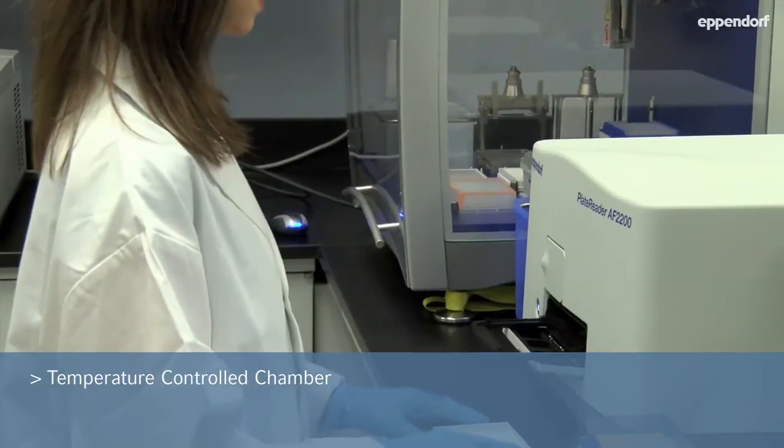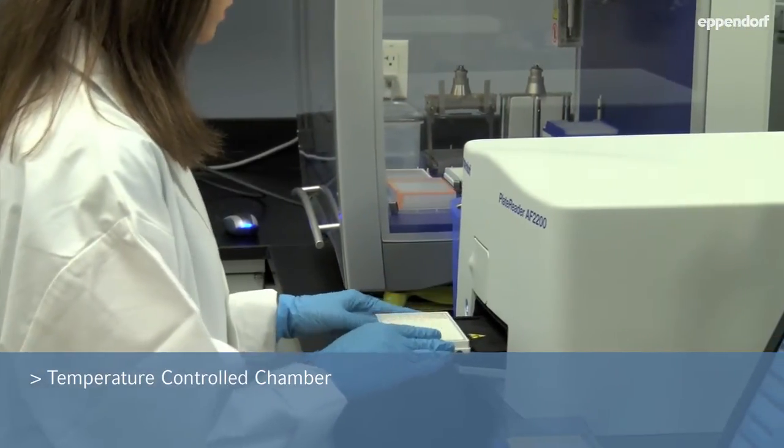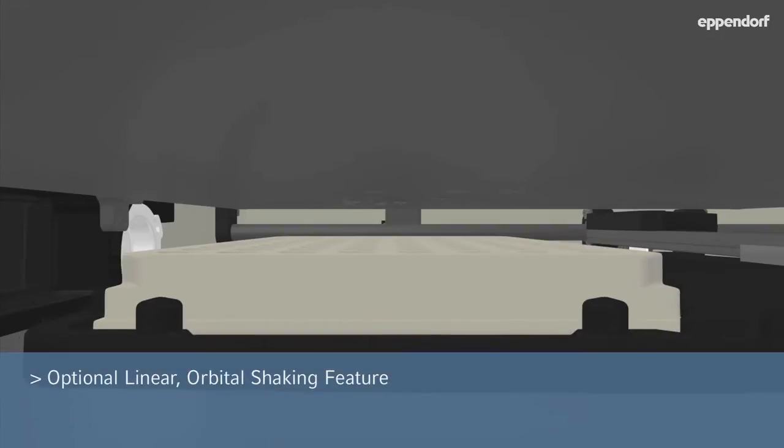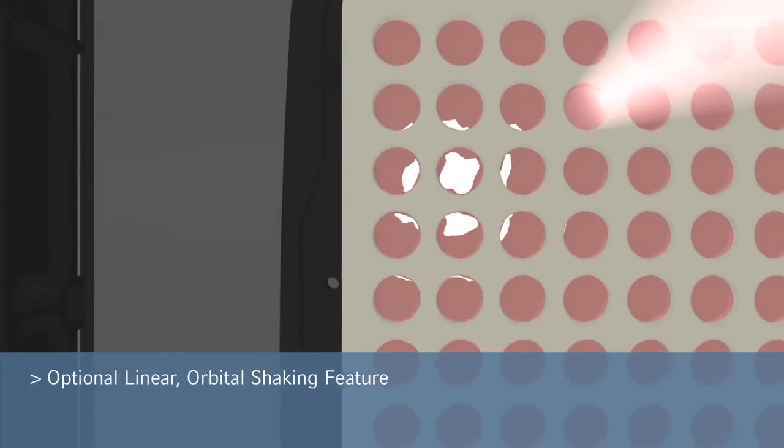A temperature-controlled chamber allows for kinetic applications. The plate reader provides optional linear and orbital shaking, as well as the ability to set lag and dwell times.